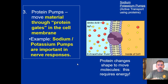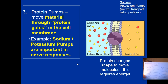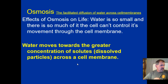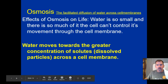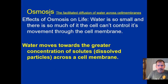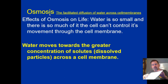Now moving to the last flowchart. If you haven't drawn the second flowchart yet, pause and draw it. At the top small oval, write the word osmosis. Osmosis is a kind of facilitated diffusion, but because water is so important to cells it gets its own special treatment. Write 'effects of osmosis on life' — water is so small and abundant that cells can't control its movement through the cell membrane.